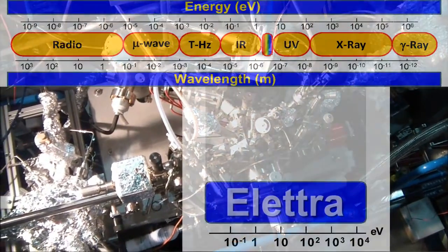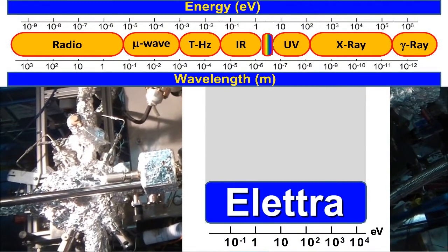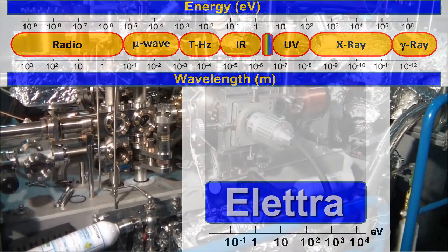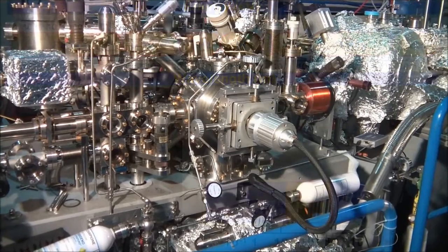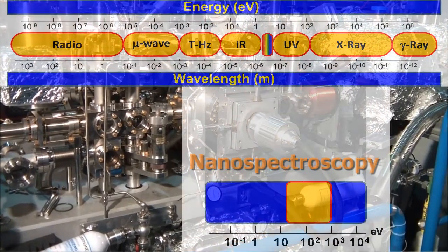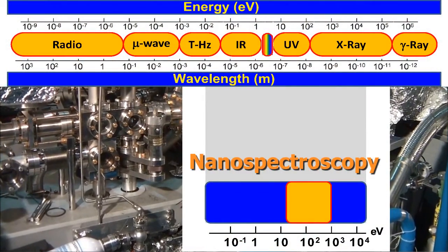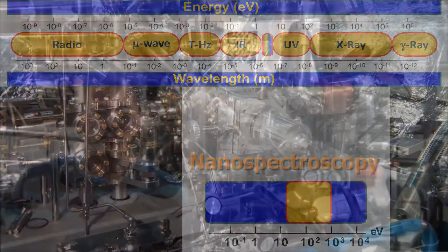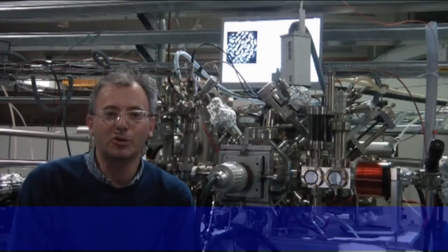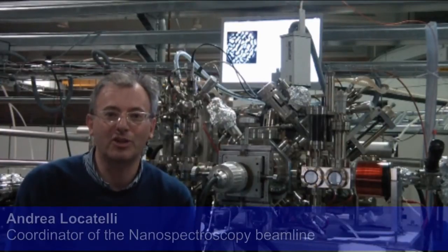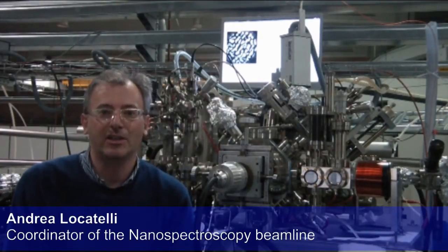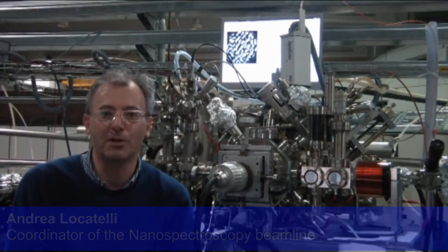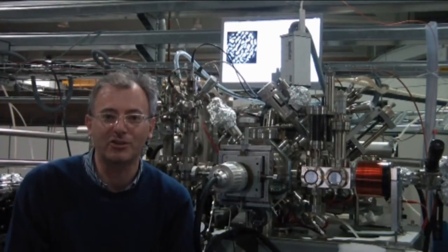Of the electromagnetic spectrum covered by Elettra, which ranges from infrared to high-energy X-rays, the nanospectroscopy beamline operates from UV up to 1000 eV, thanks to an undulated source and variable line-spacing monochromator. The spectroscopic photoemission and low-energy electron microscope is the dream of every surface scientist. It's all there, several important complementary techniques in just one instrument.